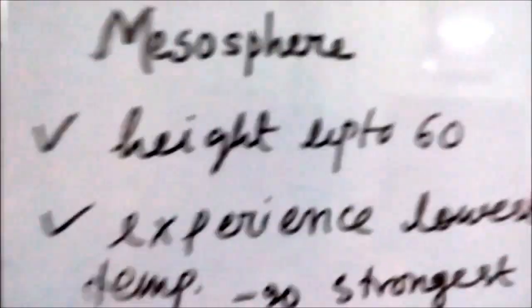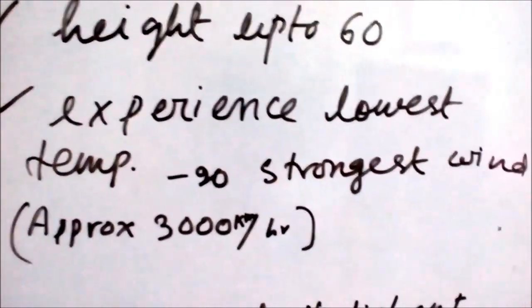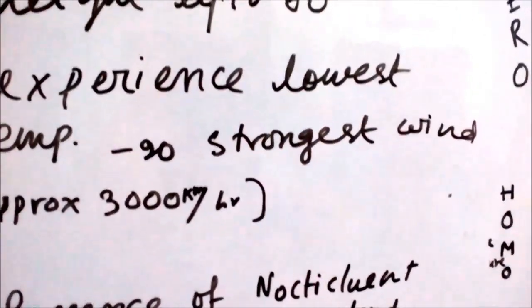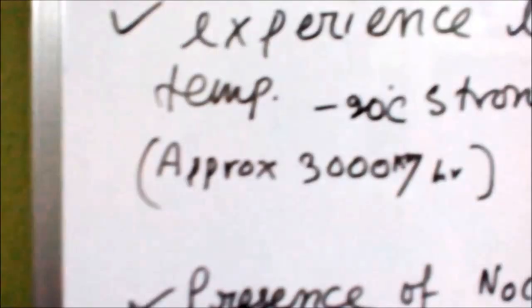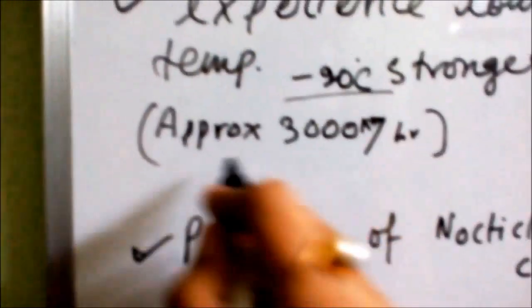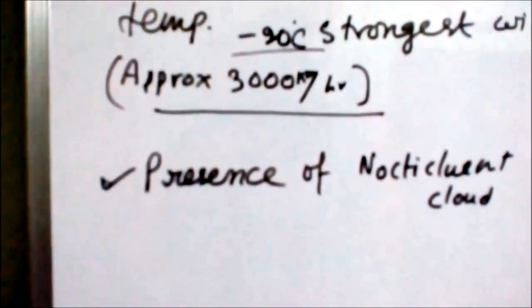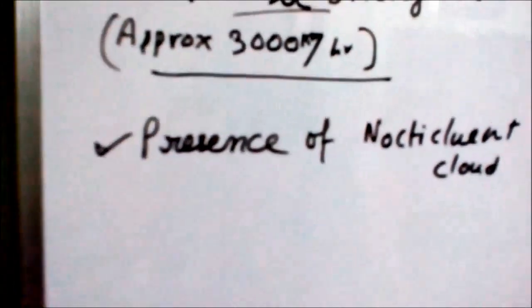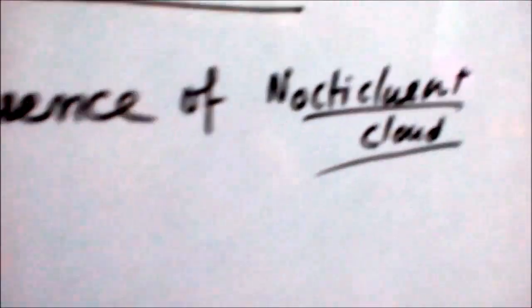The next layer is the mesosphere. Here temperature decreases fairly uniformly from the base of the mesosphere to the mesopause, with a minimum temperature of about minus 90 degrees Celsius. This layer experiences very low temperature — around minus 90 degrees Celsius — and very strong winds with a velocity of up to 3000 km per hour. A special cloud formation called noctilucent clouds is also present in this layer.